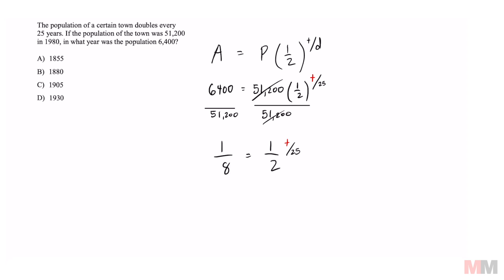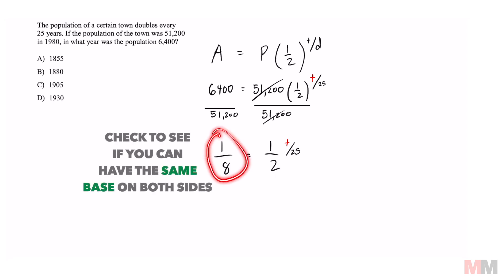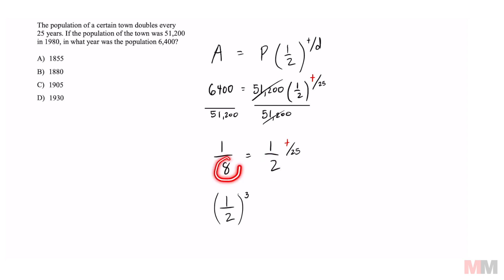You can actually do this without taking natural logs. If you notice that one-eighth can be written as one-half raised to the third power. How did I get that? I always check to see if this number right here can be written in this base, and 8 is the same thing as 2 to the third power. So always check for that because you can do this without a calculator.